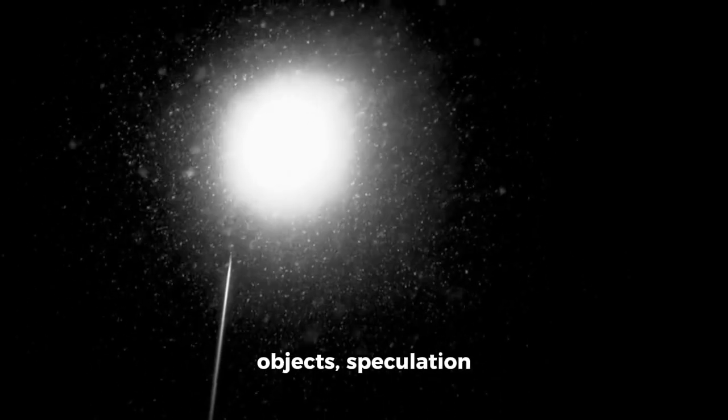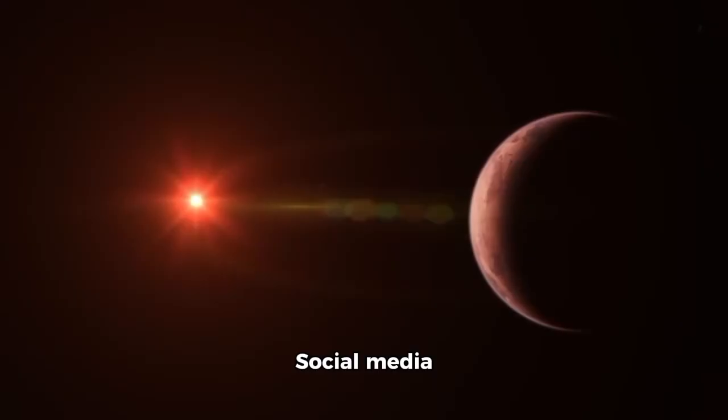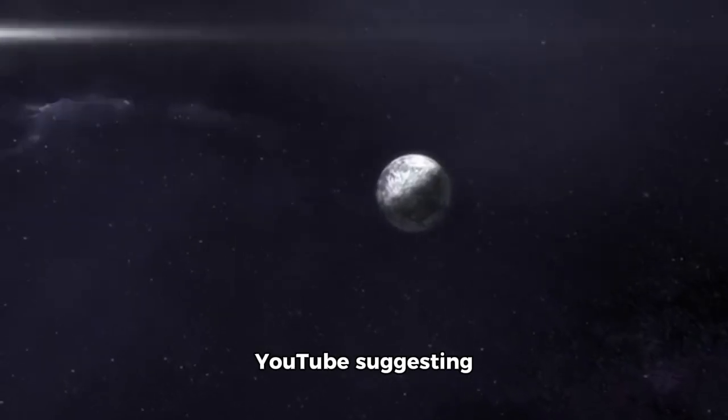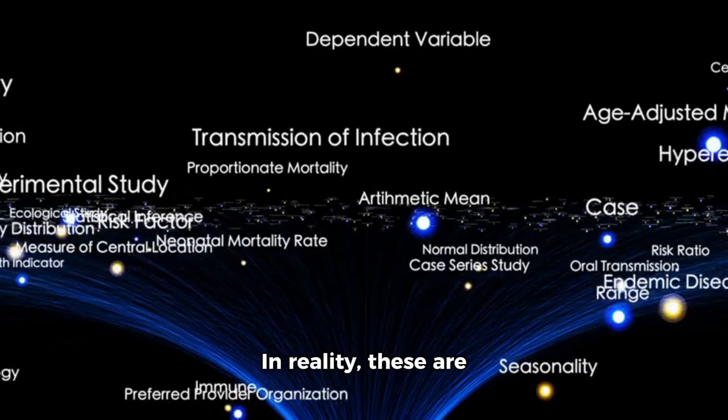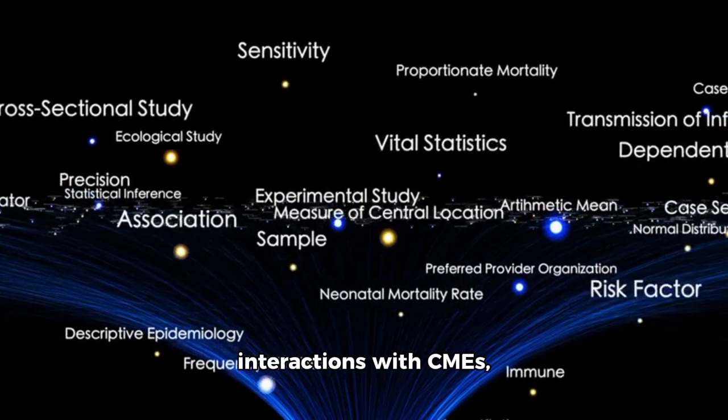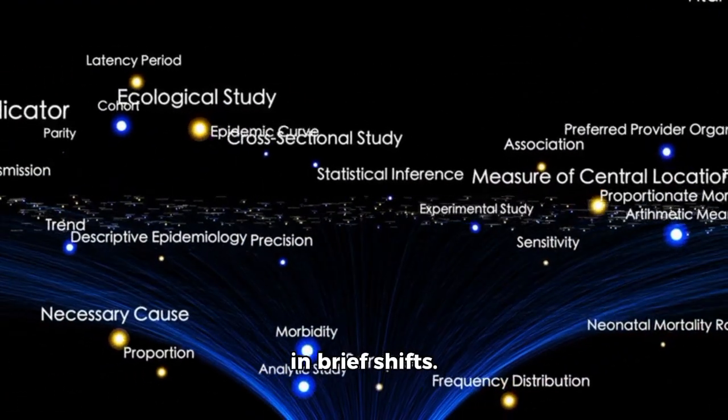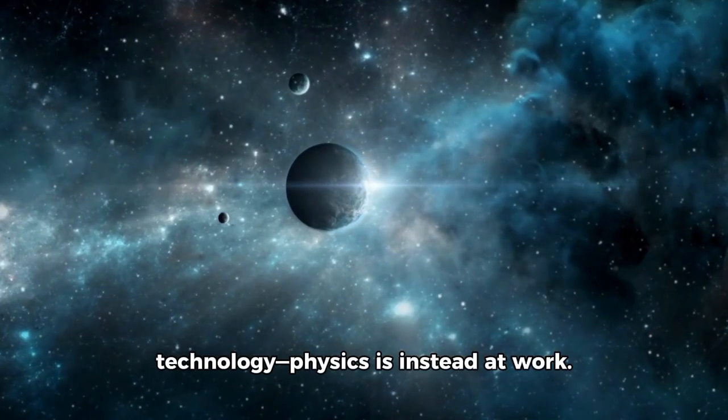With interstellar objects, speculation often runs wild. Remember the buzz around Oumuamua being sold as an alien probe? Social media frequently amplifies claims of impossible behaviors, such as recent videos on YouTube suggesting that 3IATLAS did something irrational near Mars. In reality, these are explainable: brightening from outgassing, tail interactions with CMEs, or solar heat-driven formations that result in brief shifts. No evidence points to artificial technology; physics is instead at work.